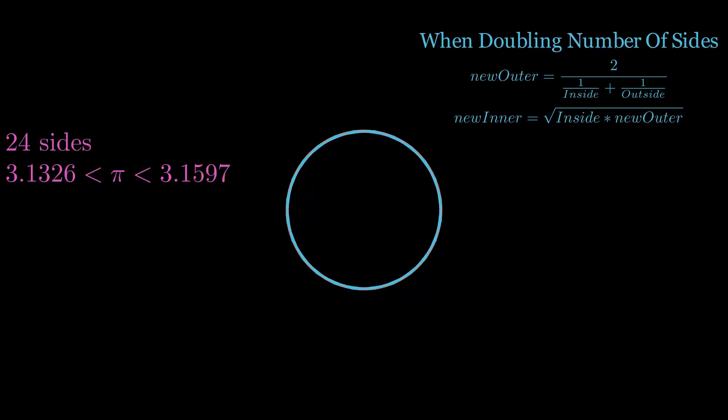He then went from 12 to 24 sides to 48 and finally 96 sides. This is where Archimedes stopped, because his estimate was good enough for everything he needed it for, and bear in mind that he was doing all of this by hand with fractions.